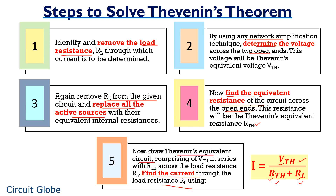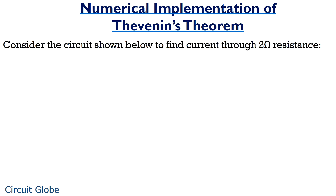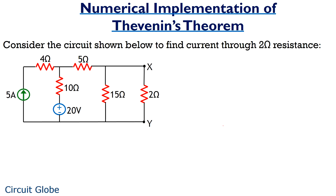Now let's take an example to have a better idea about how to derive a Thevenin's circuit from a complex network. Consider the circuit shown here. As it is clearly written that we have to calculate the current through the 2-ohm resistance. So for this particular circuit, the 2-ohm resistance will act as the load resistance, and we have to calculate Vth and Rth across these two open ends. So firstly we have to remove this load resistance RL in order to find Vth and Rth.